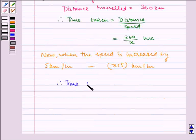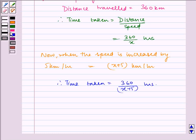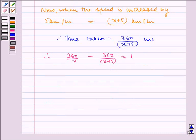Therefore, time taken is 360 by x plus 5 hours. Now, the time difference is 1 hour. So our equation will be 360 by x minus 360 by x plus 5 equals 1.